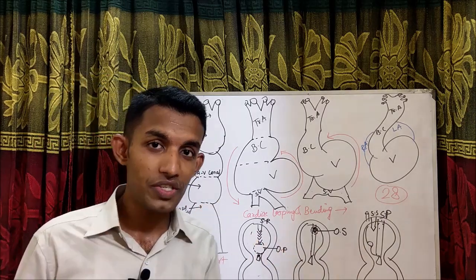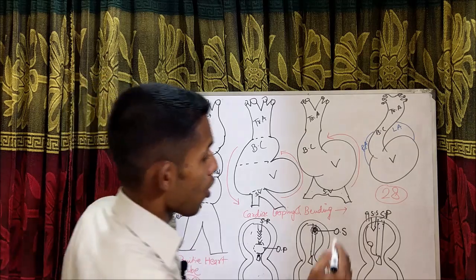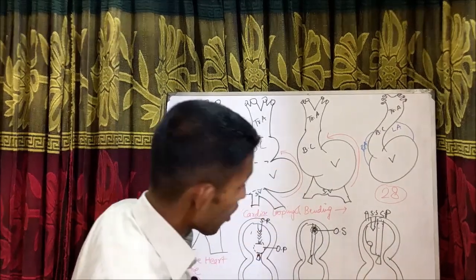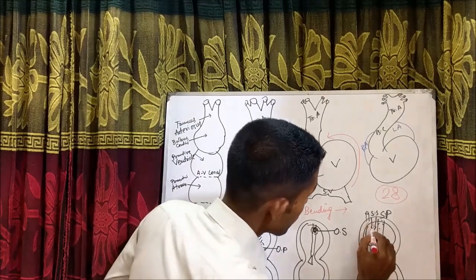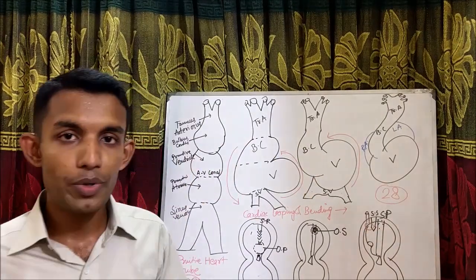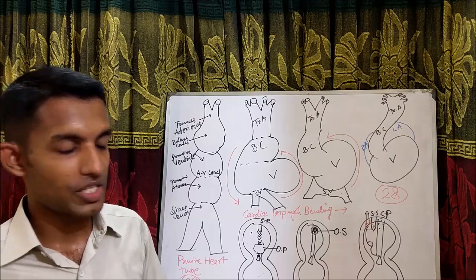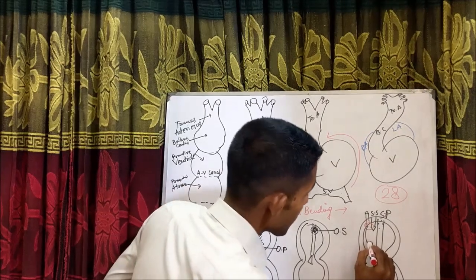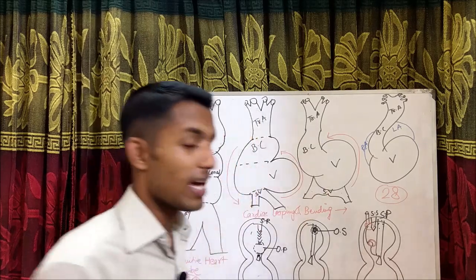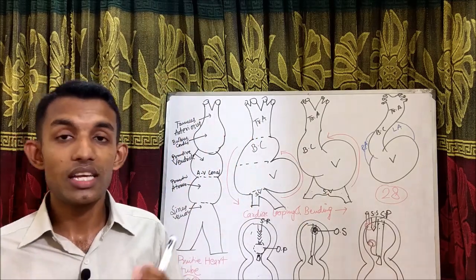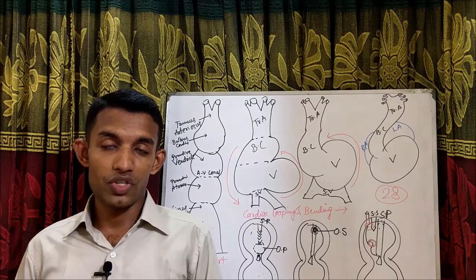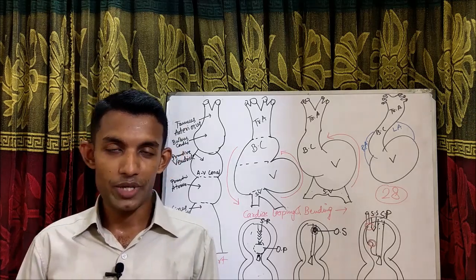What is superior sinus venosus defect? When the sinus venosus defect includes the superior vena cava, it is called superior sinus venosus type of ASD. And when any defect includes the inferior vena cava, it is called inferior type of sinus venosus ASD. This is all about the embryological explanation for understanding the types of ASD.